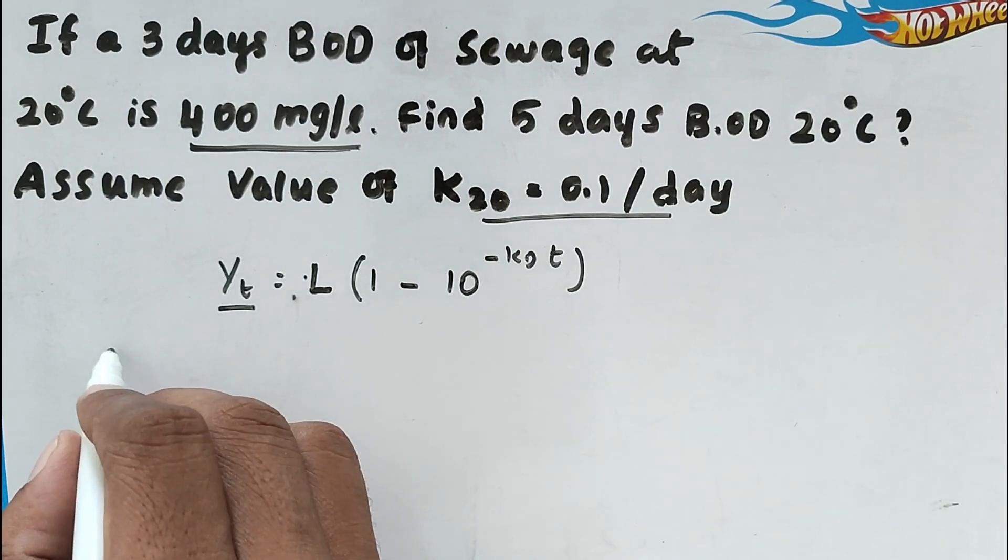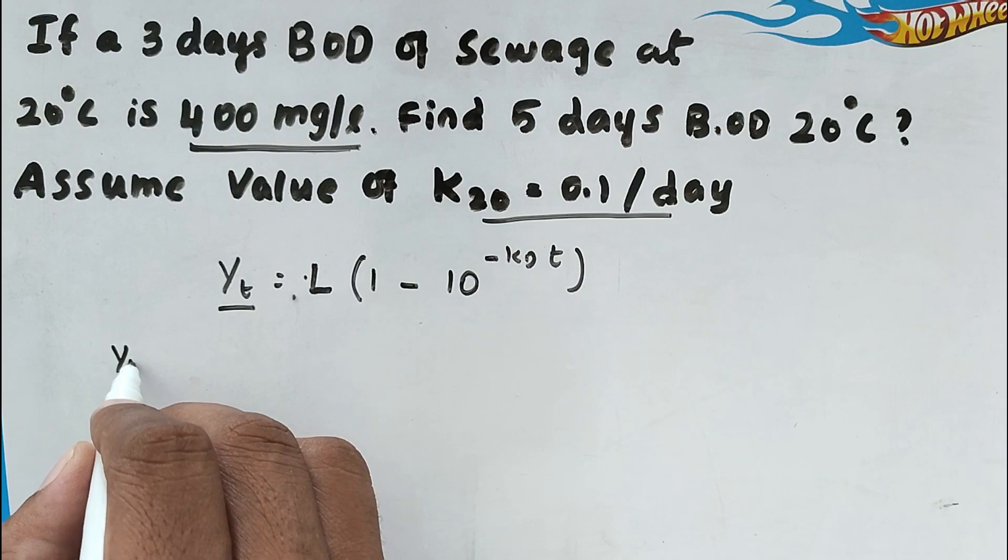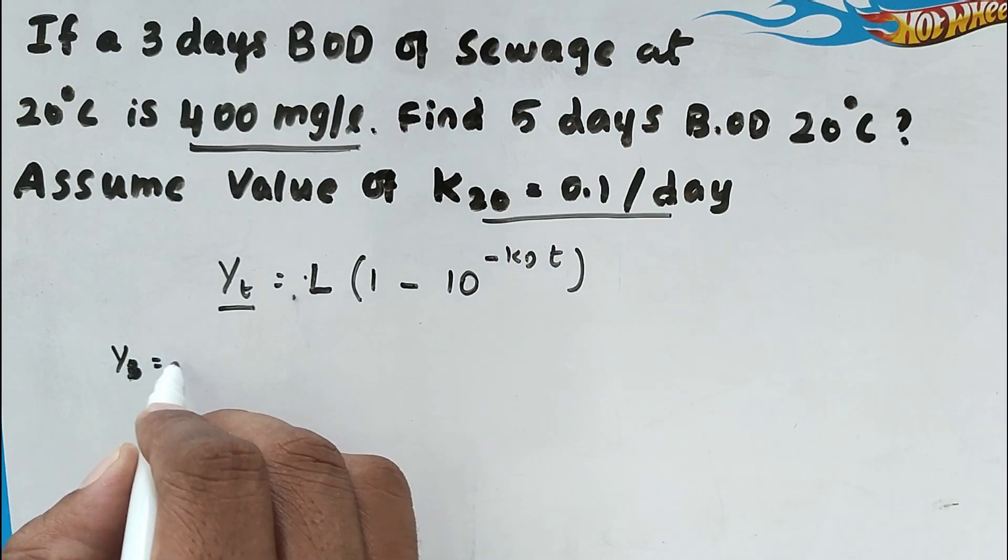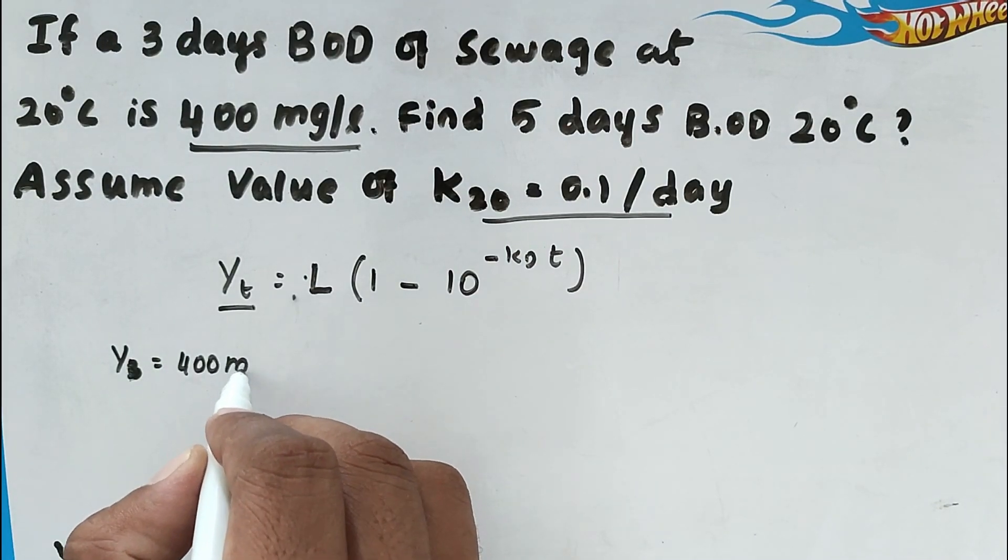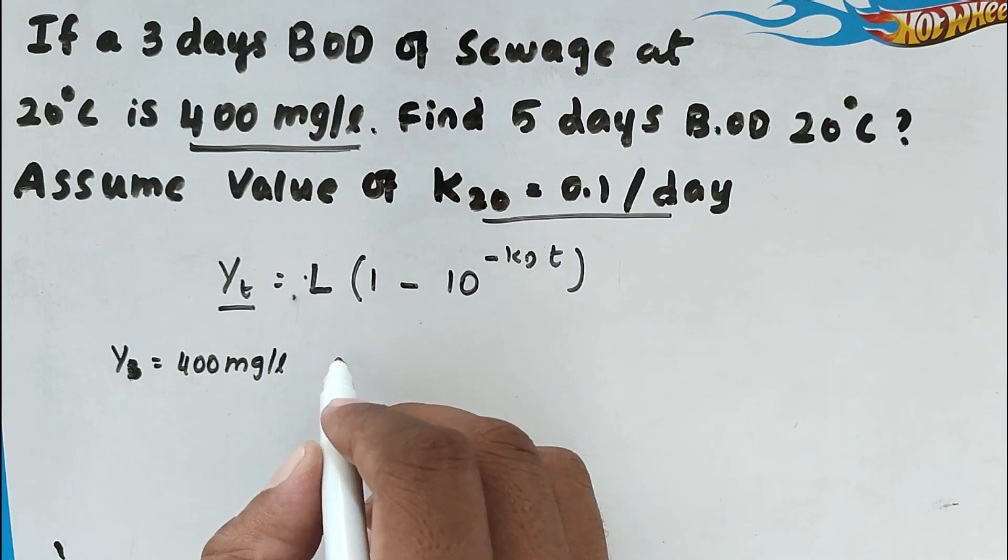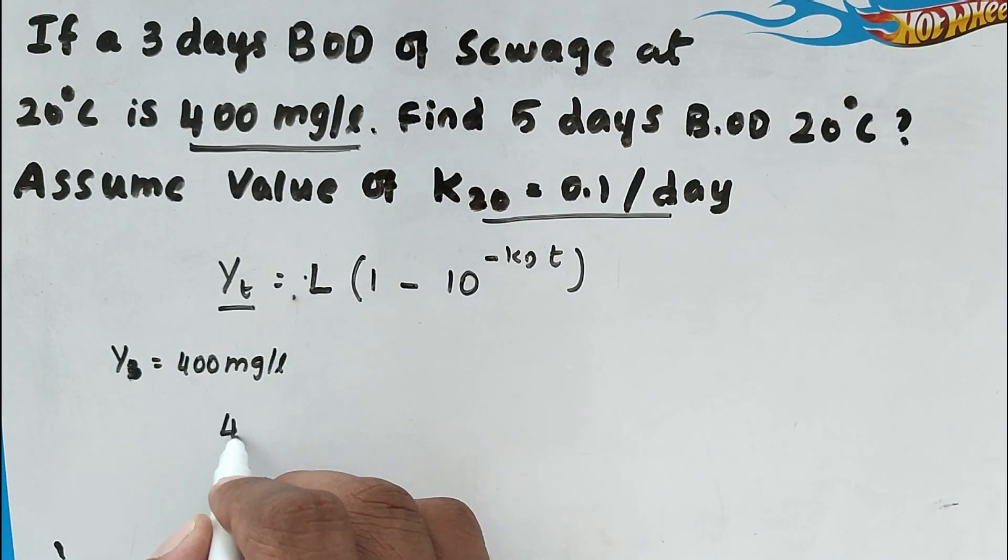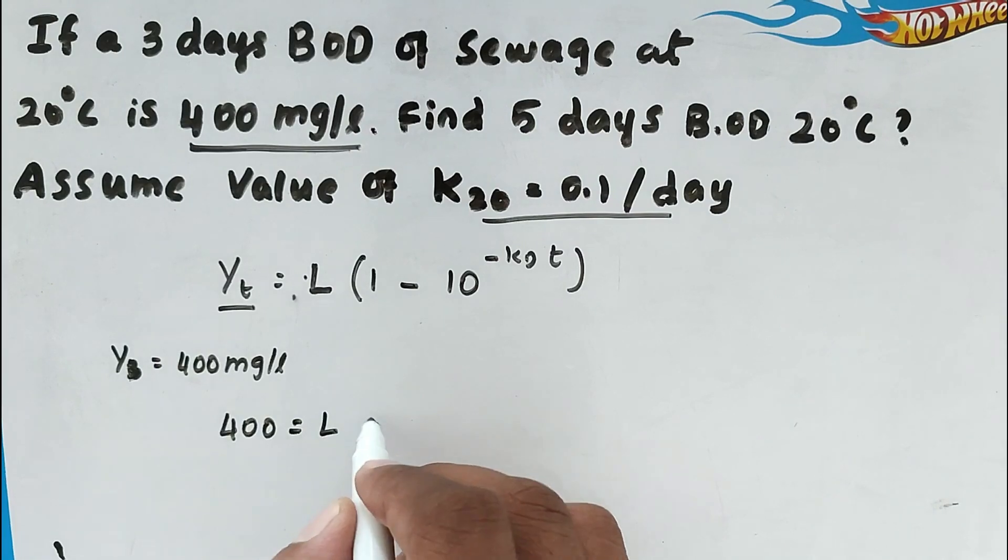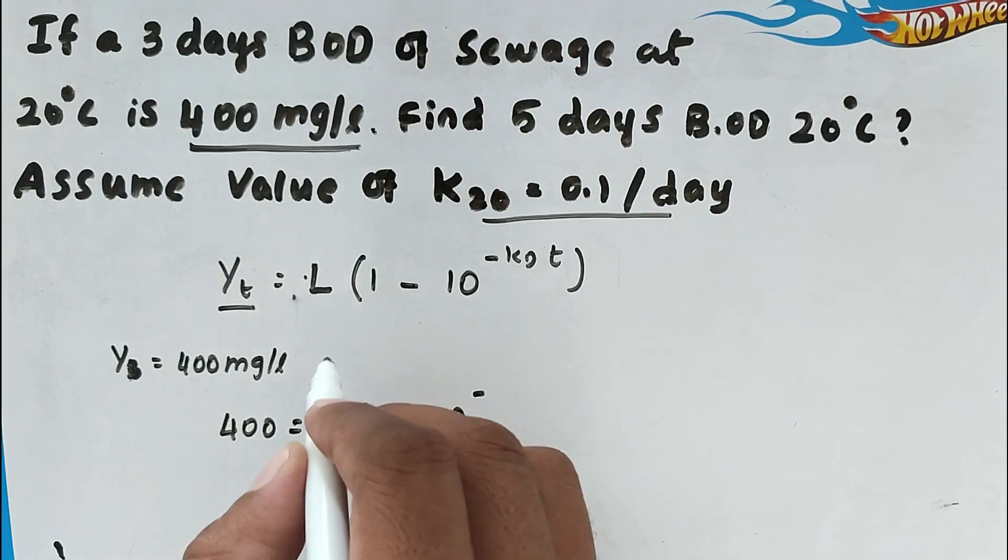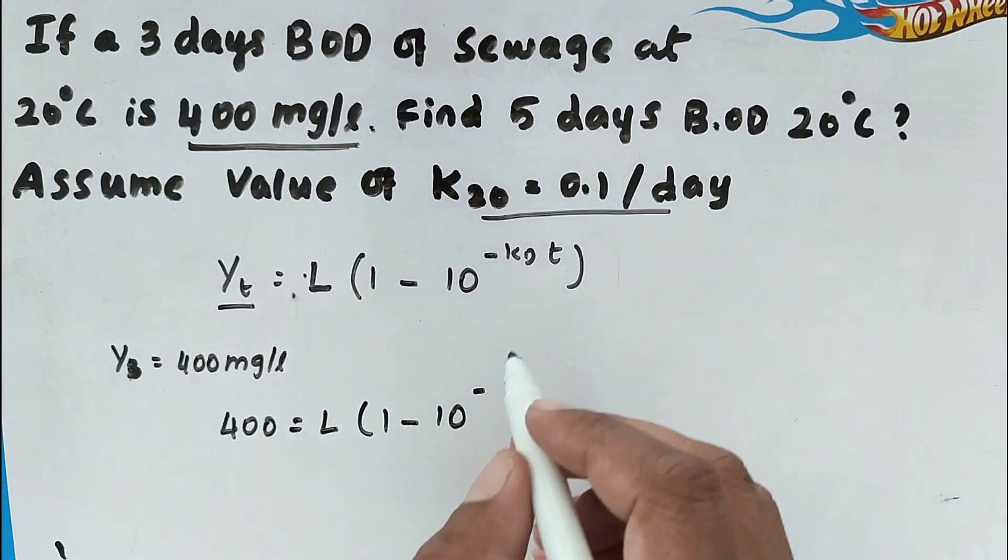So Yt, that is Y3 equal to 400 milligram per liter, that is given. So now we can take 400 equal to L into 1 minus 10 power Kd value is given, that is 0.1.